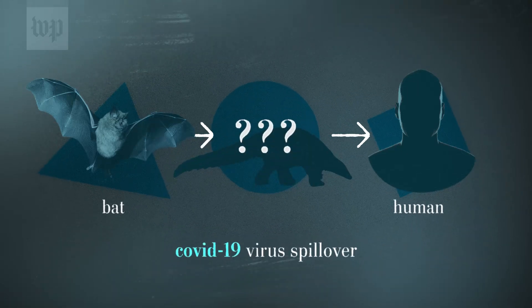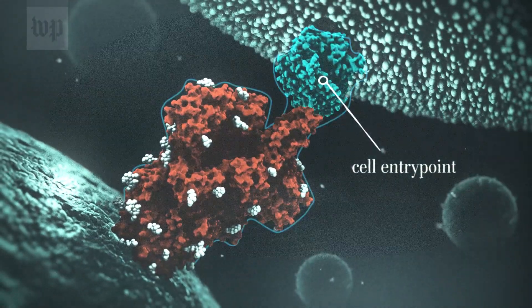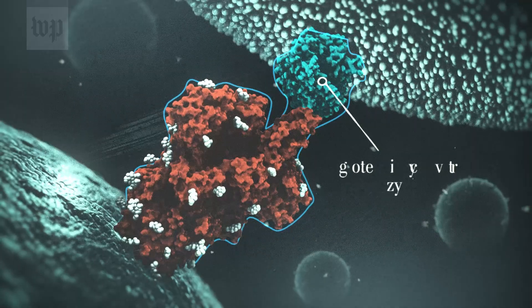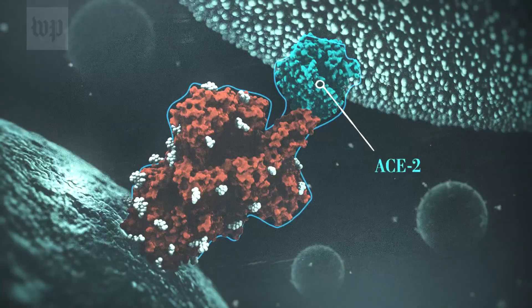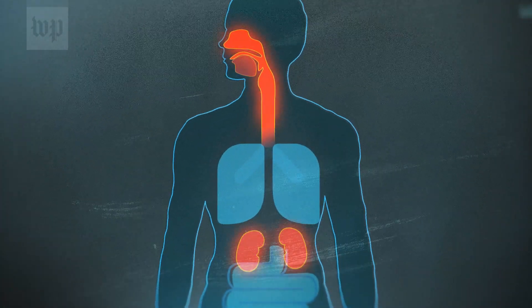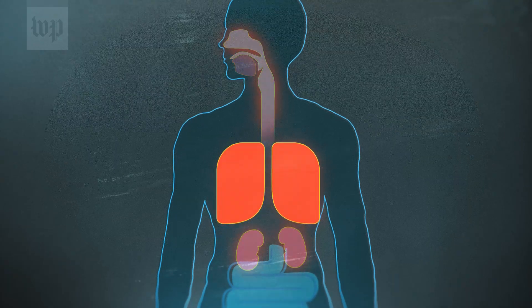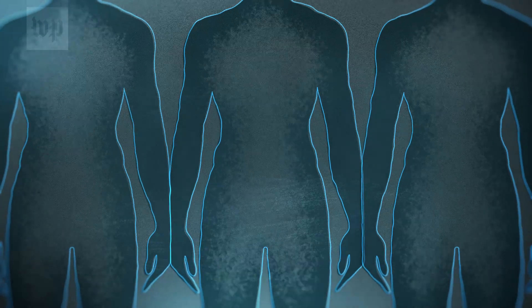And when the novel coronavirus took that jump, it targeted the same entry points that the SARS coronavirus had, proteins called angiotensin-converting enzyme 2, or ACE2 for short. These enzymes are found on cells in our throat, nose, kidneys, and lungs. Normally, they help regulate blood pressure for the body. Coronaviruses turn them into a backdoor.